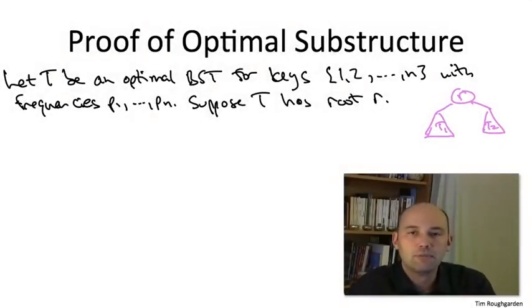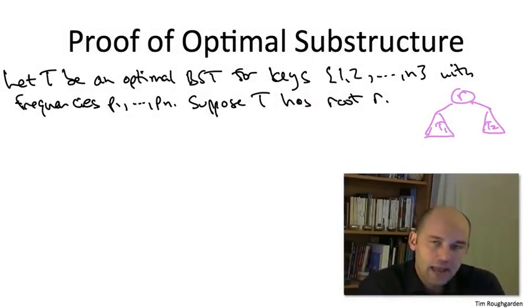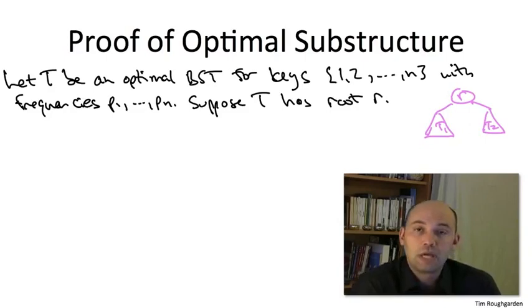Let's take any optimal binary search tree for keys 1 through n with frequencies p1 through pn. The thing we're trying to prove asserts that the left subtree T1 should be optimal for its keys, 1 through r-1, and the right subtree T2 should be optimal for its keys, r+1 through n.